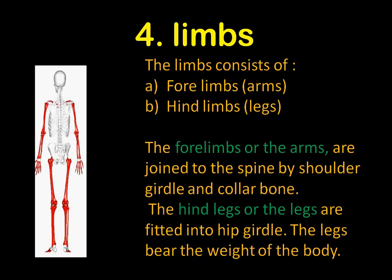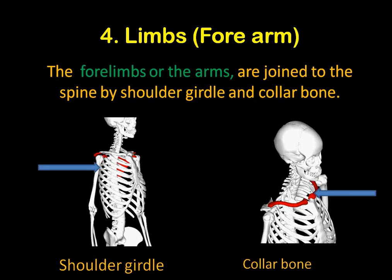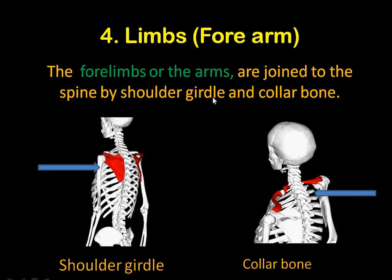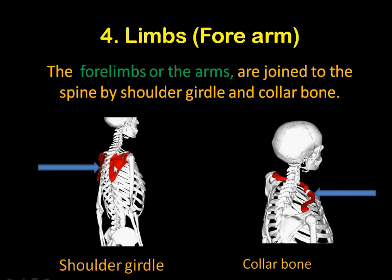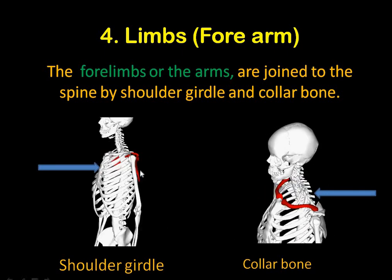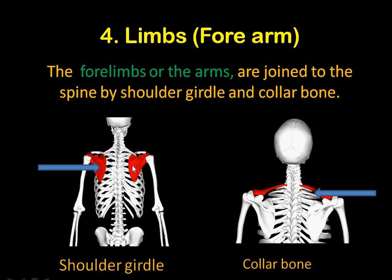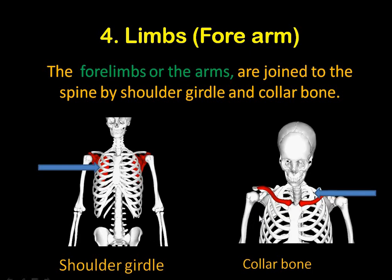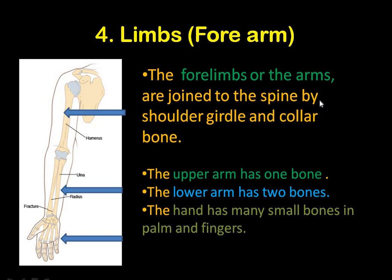Your body's weight is on your legs. The forelimbs or arms are joined to the spine by the shoulder girdle and collarbone. The upper arm has got one bone. The elbow has two bones. And you have multiple bones in your palm and fingers.